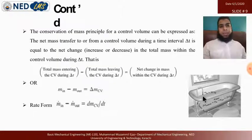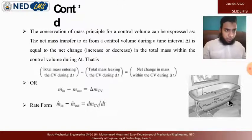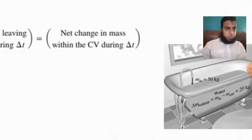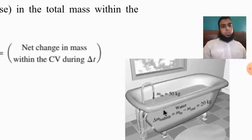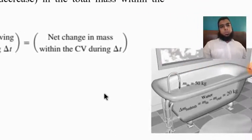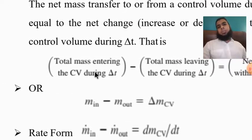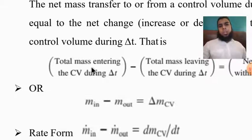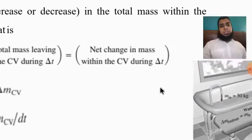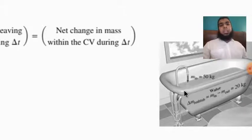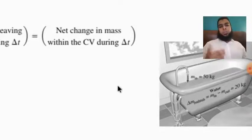Consider a tub as a control volume. Net mass change equals total mass entering minus total mass leaving. For example, if mass in is 50 kg and mass out is 30 kg, the net change is 20 kg. So if the rate is 50 kg per second in and 30 kg per second out, then 20 kg of mass is added to the tub every second.